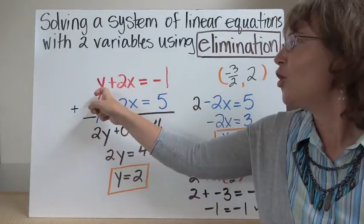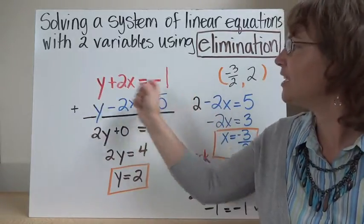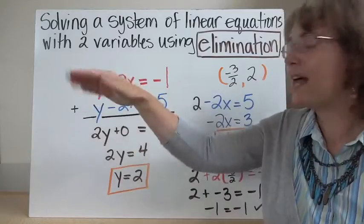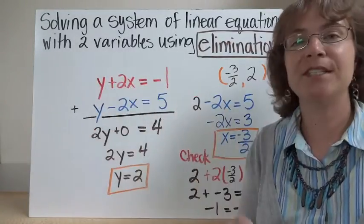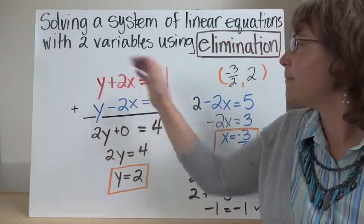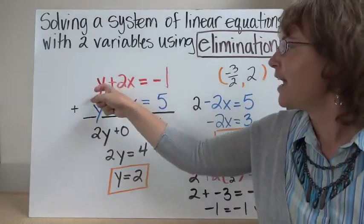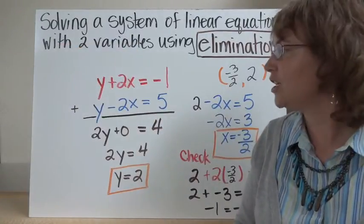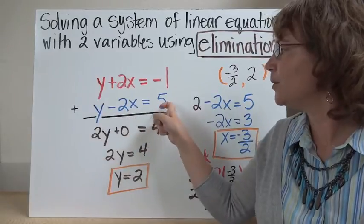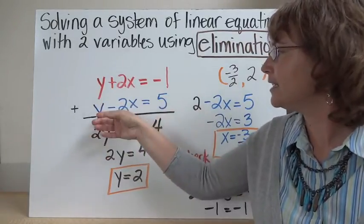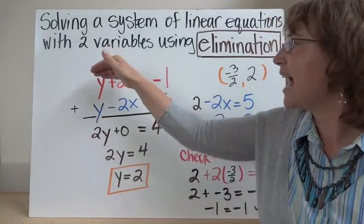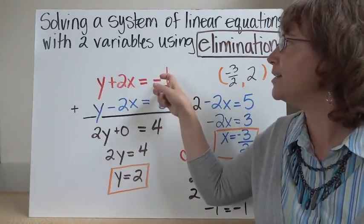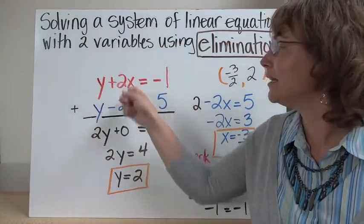So let's say we have an equation: y plus 2x equals negative 1. This is a linear equation — it's a line. If we added 5 to both sides of it, no big deal — still the same equation, it's still balanced as long as we do the same thing to both sides. If we multiply both sides by 5, still the same equation. In fact, when we have an equation, we can add another equation to that equation and not change it.